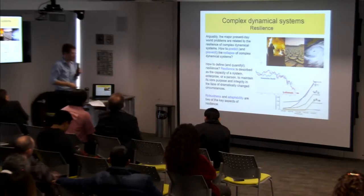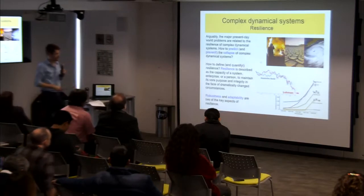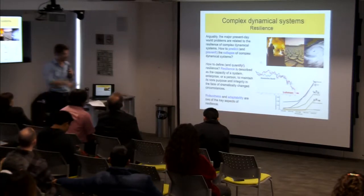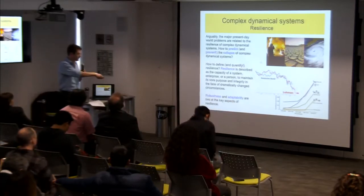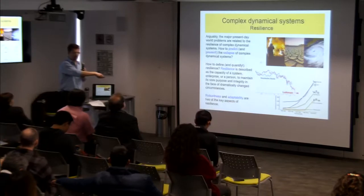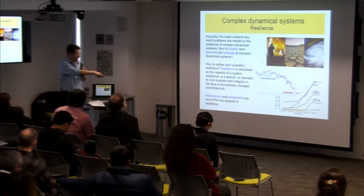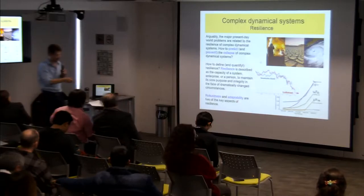Apparently, two key aspects of resilience are robustness — the ability to resist perturbations from the environment — and also to adapt to those perturbations.